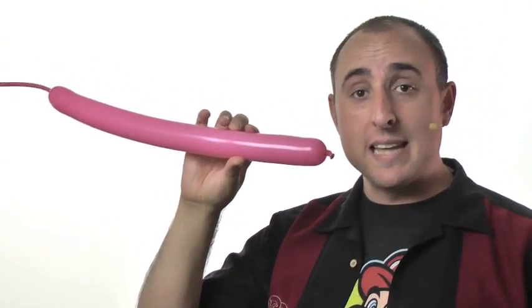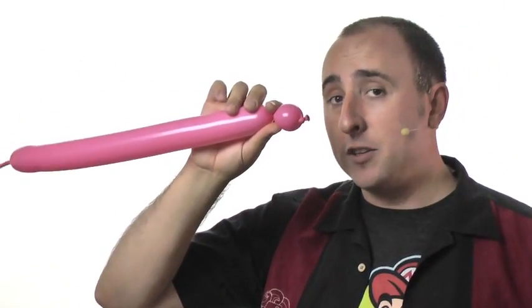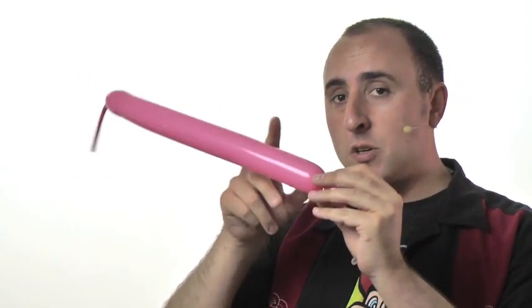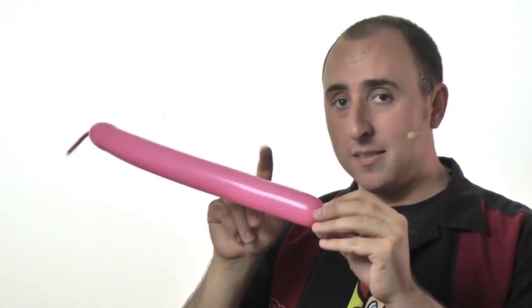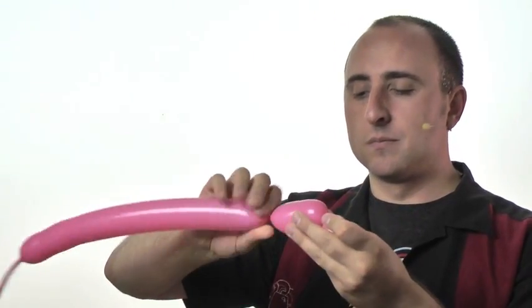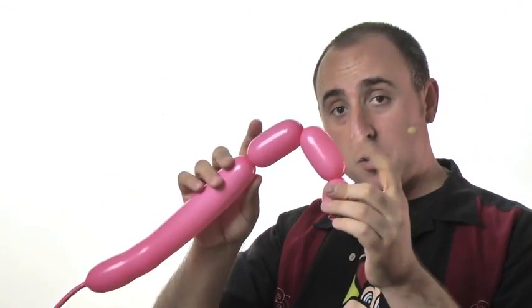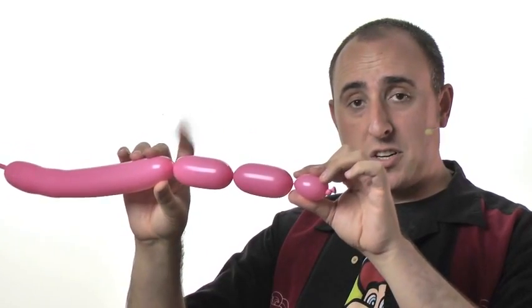First thing we're going to do is make the bunny's head and ears. To make the bunny's head, we're going to twist a small section, about one inch, and then to make the ears, we're going to twist two sections of equal length, each about two and a half inches. We want to make sure these two are the same length. Now we're going to twist this section here into this section here in a lock twist, like so.